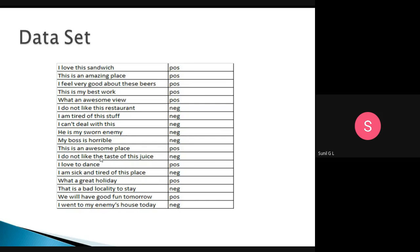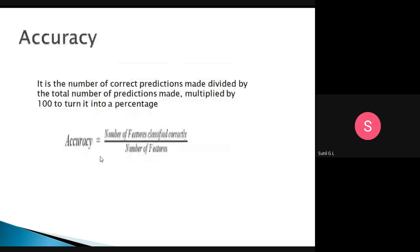We use the inbuilt Naive Bayes classifier — everything is ready, we just use those functions to classify. After that, we need to calculate recall, precision, and accuracy. First, let's understand what accuracy means. Accuracy is the number of correct predictions made divided by the total number of predictions.